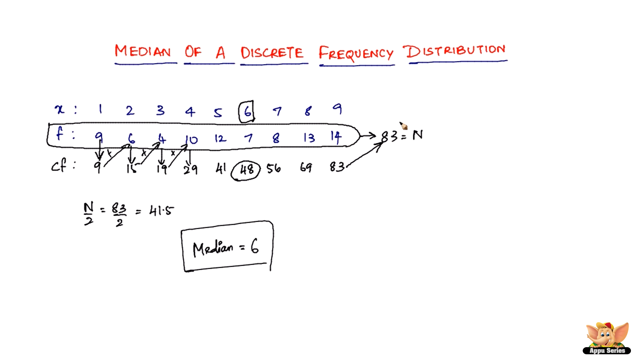Once you get the cumulative frequencies, the last one is the sum N. Divide N by 2. Then find the next higher value in the cumulative frequency, and the variate corresponding to that is the median. This is how you find the median of a discrete frequency distribution.